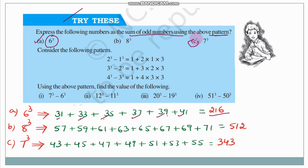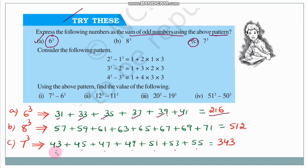For 7³: we need 7 consecutive odd numbers. 7³ = 43+45+47+49+51+53+55. Counting: 1, 2, 3, 4, 5, 6, 7 — that's 7 consecutive odd numbers, and their sum is 343 = 7³.